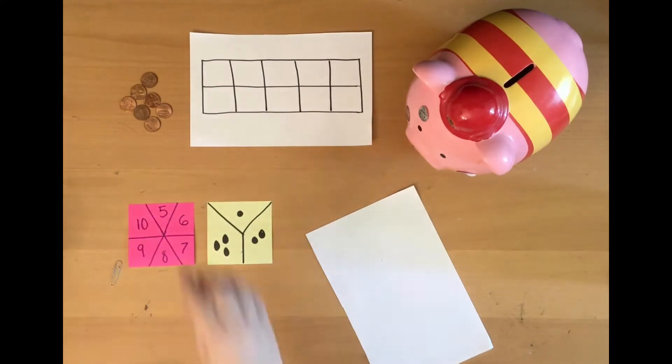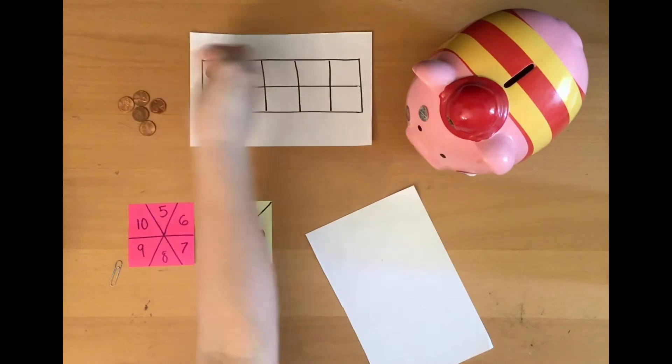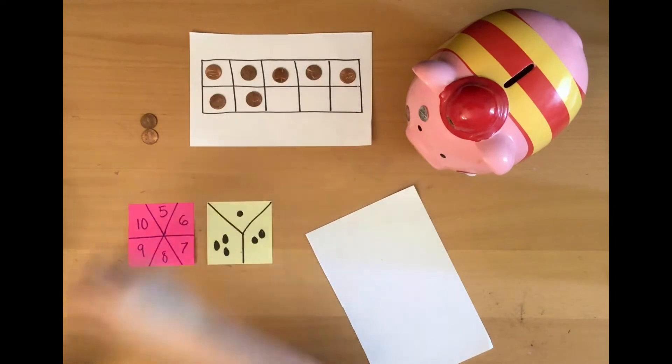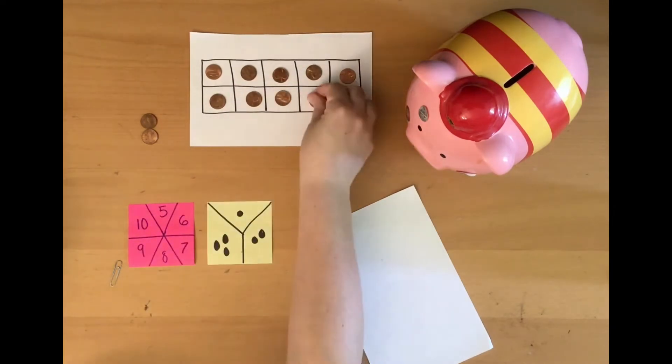I landed on 9. So I know that I need to fill up the top row of my 10 frame. You can do this along with me if you have pennies at home. So that's 5, 6, 7, 8, 9.